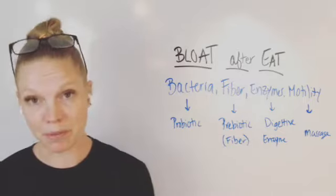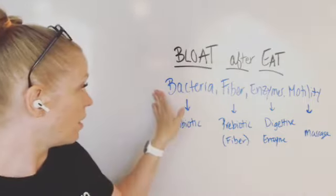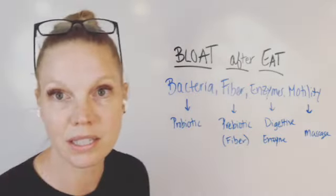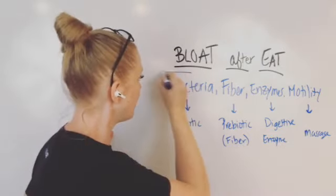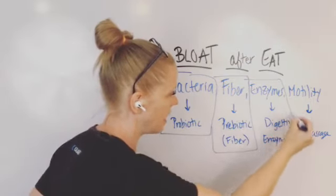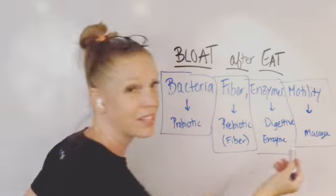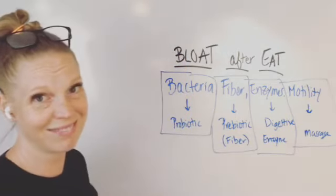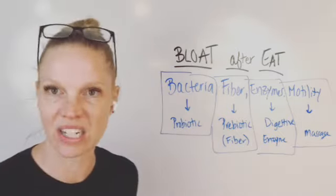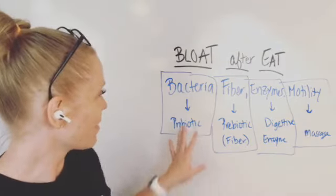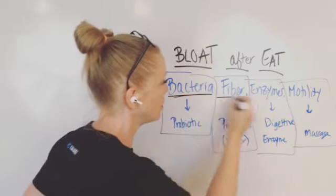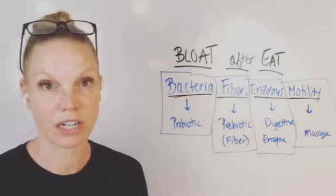So things that need to happen for proper digestion to make sure you're not getting bloated. You need to have bacteria, fiber, enzymes, and motility. Maybe this is hard to see. So I'm going to chunk this off. You need to have bacteria here, fiber, and this is not the prettiest drawing I've ever done. But again, you guys aren't here for my art skills. Hopefully. If you are, you're probably disappointed. Look at these weird squares. You need to have bacteria, fiber, enzymes, and motility. So bacteria, we're most often, these are the four main things to really take care of for digestion.